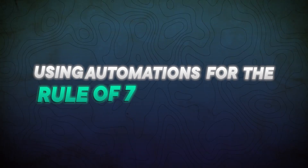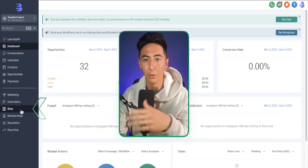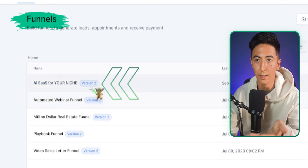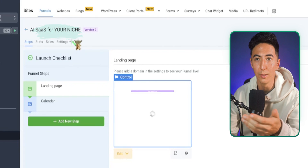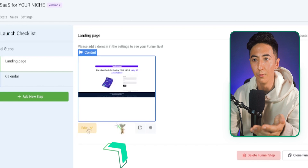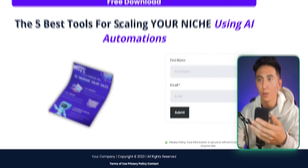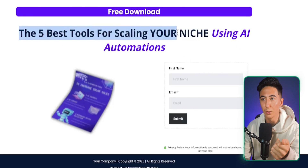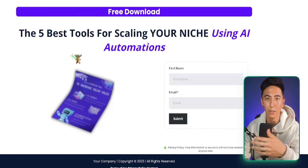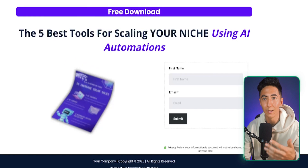That takes us to the last step: using automations for the rule of seven framework. In your High Level account, click on Sites and create a funnel for your business. I already have one called 'AI SaaS for Your Niche.' Viewing the page, it says 'Five Best Tools for Scaling Your Niche Using AI Automations' — someone can enter their name and email to receive this lead magnet as a free download, which collects their information.